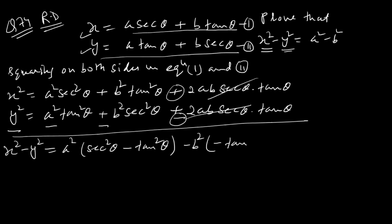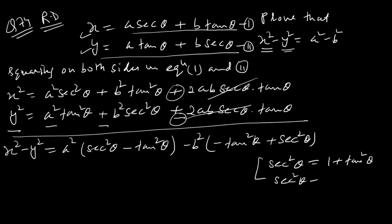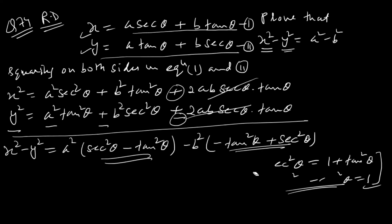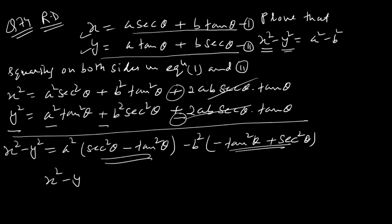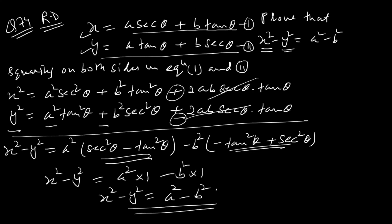तो मिर पास: a² (sec²θ minus tan²θ) minus b² (sec²θ minus tan²θ). Identity है sec²θ minus tan²θ equals to 1. तो x² minus y² equals to a² into 1 minus b² into 1. Final answer: x² minus y² = a² minus b². Hence proved.